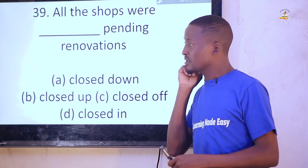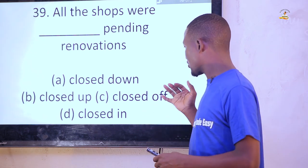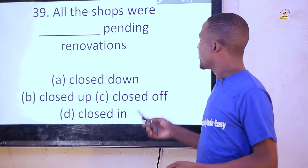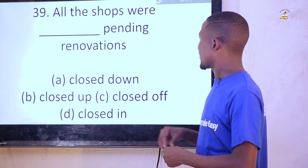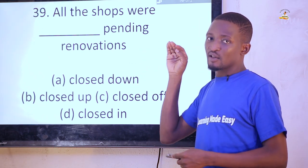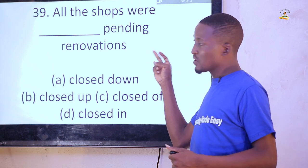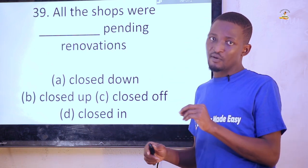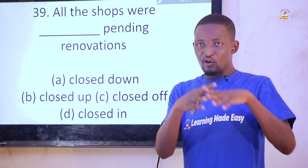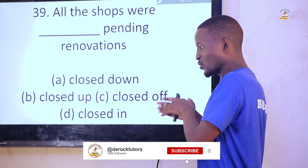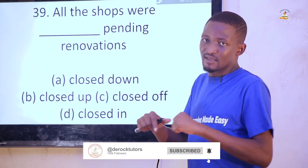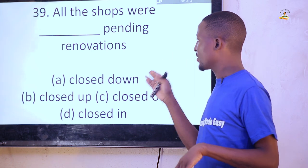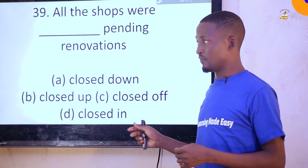'All the shops were dashed pending renovations.' Options: closed down, closed up, closed off, closed in. The answer is 'closed up.' The difference is: you use 'closed down' when the closure is permanent, but since it is pending renovation — a temporary closure — you say 'closed up.' If the shops were closed due to non-compliance with state rules, that would be permanent — 'closed down.' Since it is pending renovation: all the shops were closed up pending renovation.